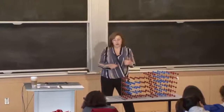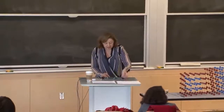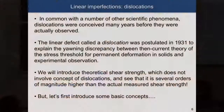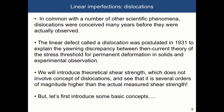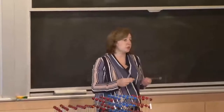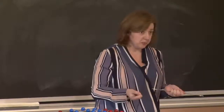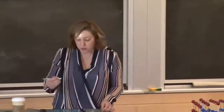Dislocations were postulated simply by observing mechanical properties of metals. Dislocations were postulated in the 1930s to explain the discrepancy between the theoretical stress threshold related to permanent deformation and what is experimentally measured. People would take a piece of metal, deform it, and measure what stress is required. They calculated what the crystal structure predicted and noticed a significant discrepancy between calculated and measured values, which led them to introduce the concept of dislocations.